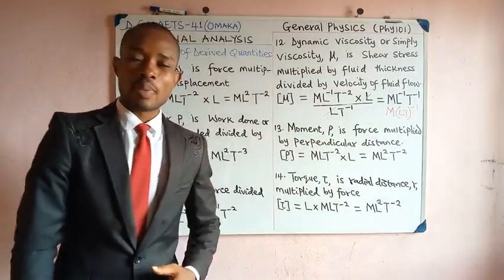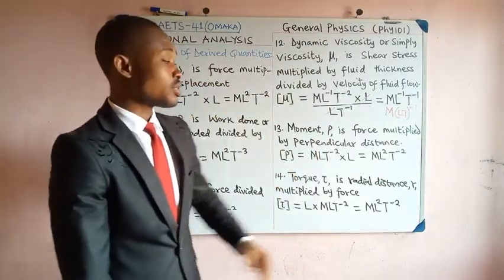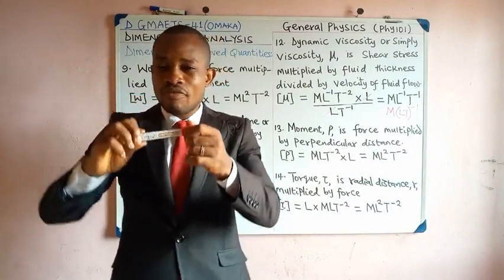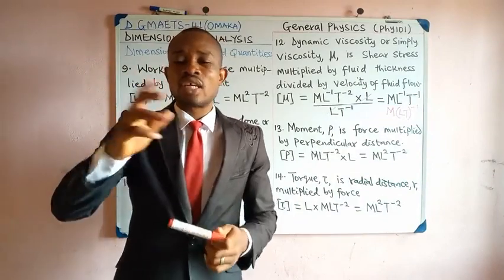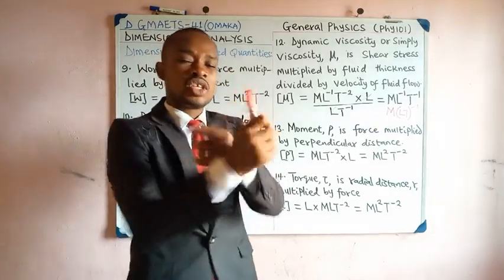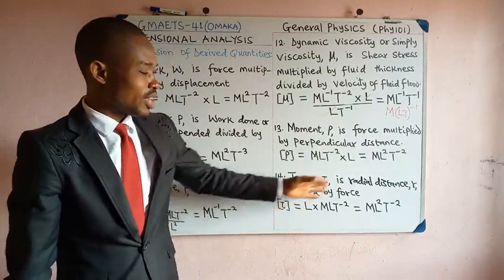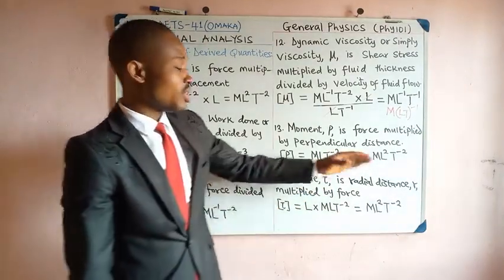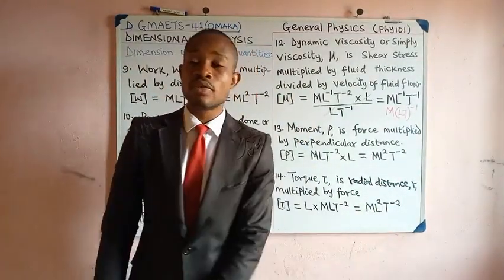Moment is force multiplied by a particular distance, so its dimension is the dimension of force times the dimension of distance: MLT⁻² × L = ML²T⁻². Torque is defined as the turning effect of a force — for example, the force applied when using a wrench to loosen a nut. Radial distance has the same dimension as length, so the dimension of torque is also ML²T⁻².